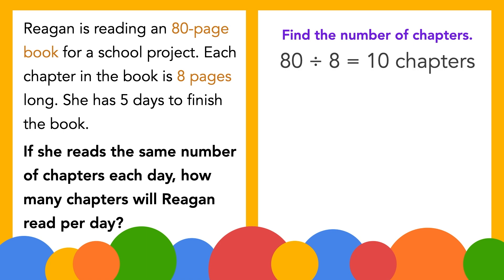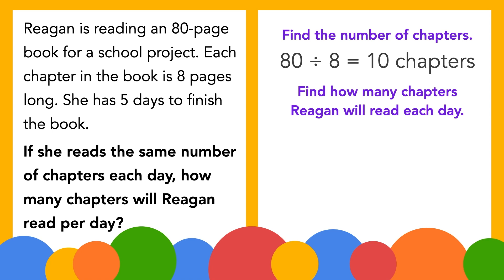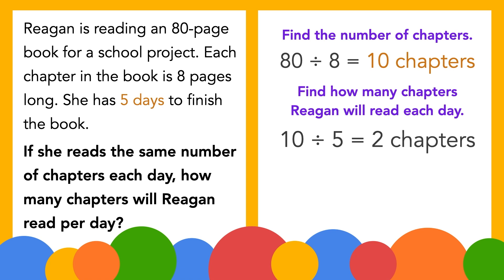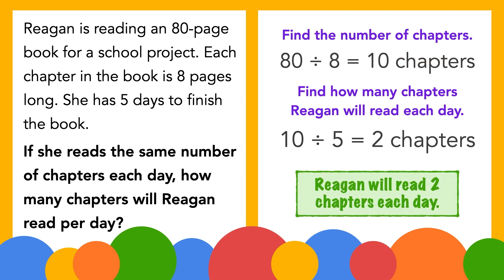Now we can find how many chapters Regan will read each day. There are ten chapters, and Regan has five days to read the book. Since she reads the same number of chapters each day, we can divide to find out how many chapters she will read each day. Ten divided by five equals two, which is two chapters. So Regan will read two chapters per day.